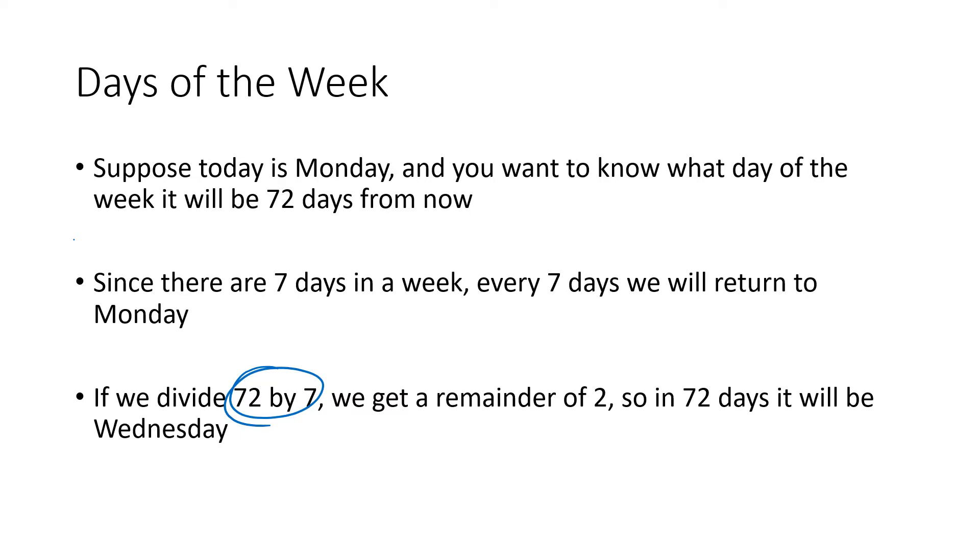If we take 72 divided by 7, on my calculator, 72 divided by 7 is going to give me 10.2857, and so on. My process says take the whole number part, the 10, multiply that by 7. 10 times 7 is 70, and then 72 minus that product is going to give me my remainder of 2. So that means I've got all these groups of 7 days that keep repeating themselves. So the day of the week 72 days from now is the same as 2 days from now. So I just think Monday, Tuesday, Wednesday. Two days from now is going to be Wednesday. So 72 days from now, it will be Wednesday.